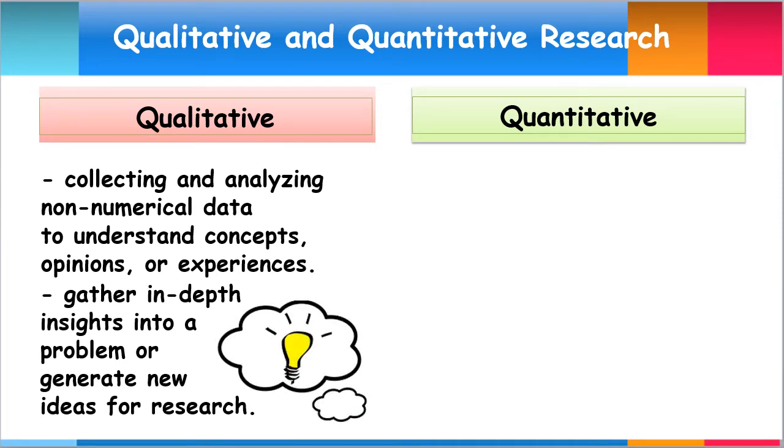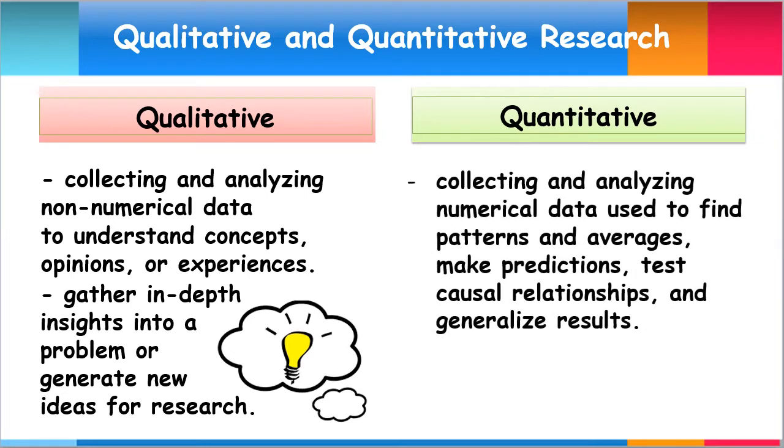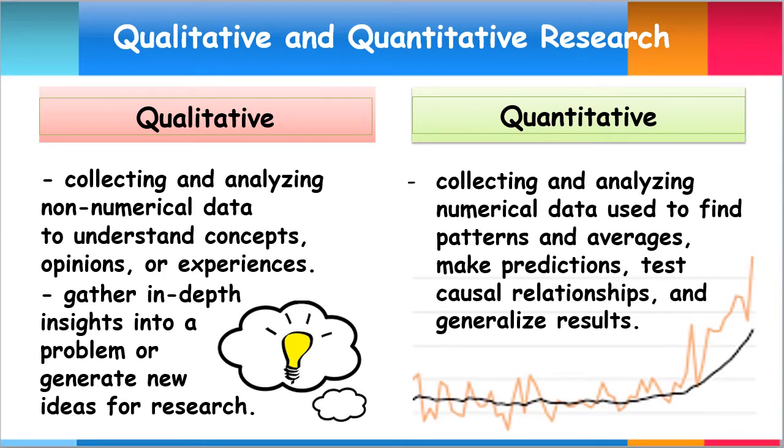Quantitative research is the process of collecting and analyzing numerical data that can be used to find patterns and averages, make predictions, test causal relationships, and generalize results. It is used to quantify the problem by generating numerical data or data that can be transformed into usable statistics. It is also used to quantify attitudes, opinions, or behaviors.